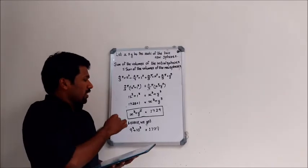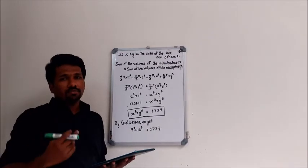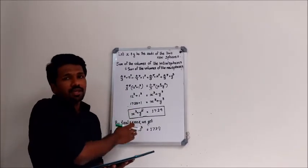So the best method you can use here is trial and error. That is, you can put the answer options into this equation and see which answer option satisfies this equation.